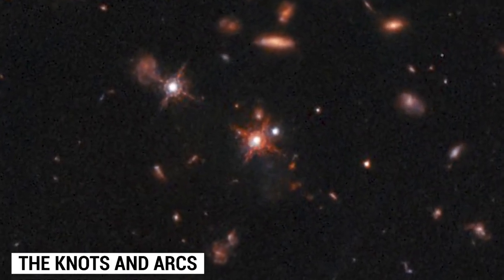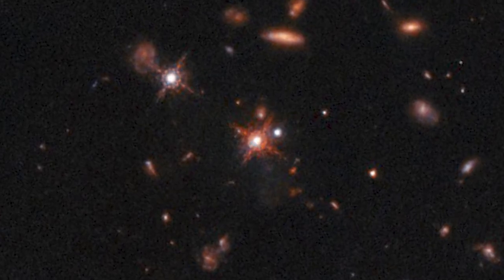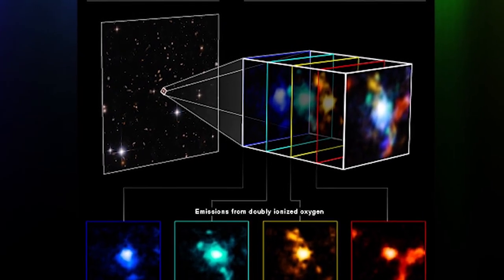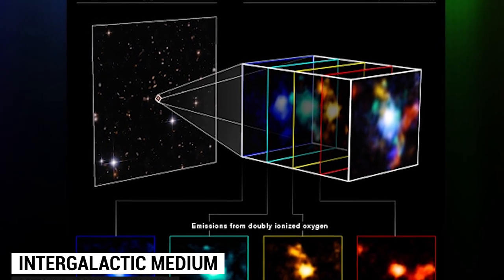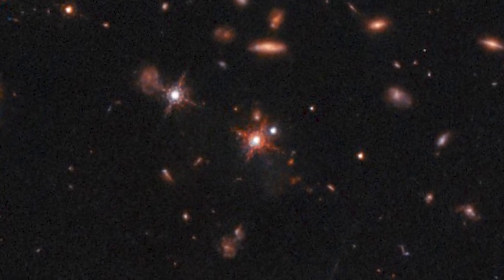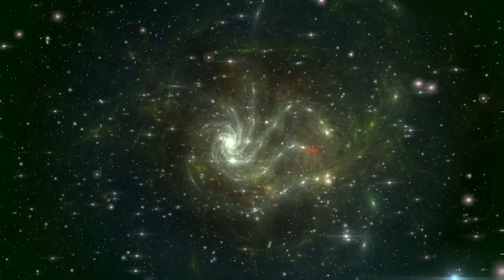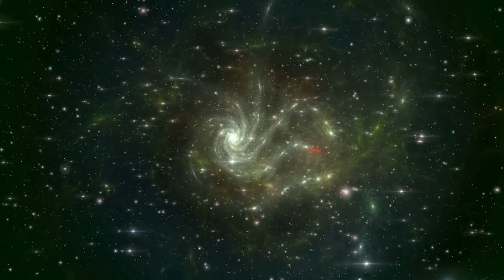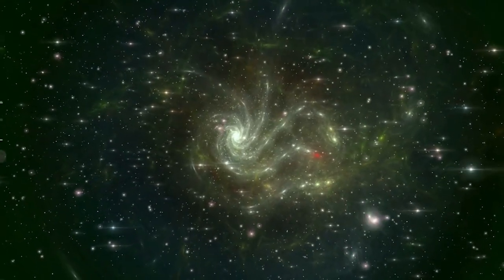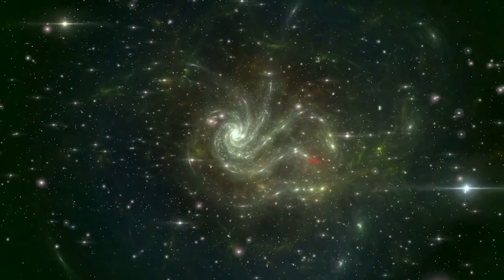The knots and arcs are essential for understanding galaxies' evolution, because they can be used as probes of intergalactic medium. The study found that some of these cosmic knots have been wrapped by gravitational interactions between their host clusters and other nearby objects, like small satellite galaxies or dark matter halos surrounding them.